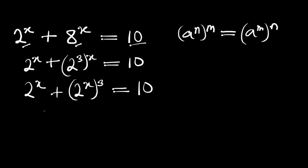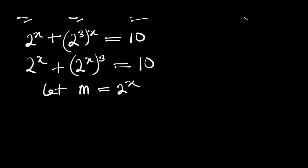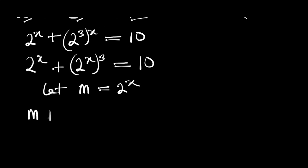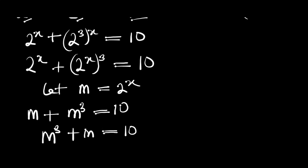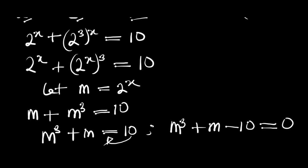Now let m = 2^x. So we are going to have m + m^3 = 10. We can rearrange it to m^3 + m = 10, and from here we have m^3 + m - 10 = 0.